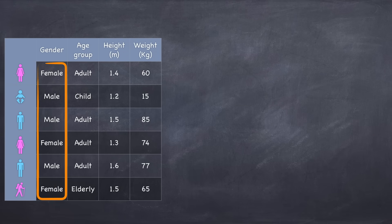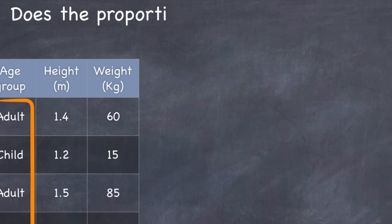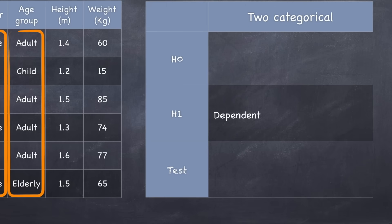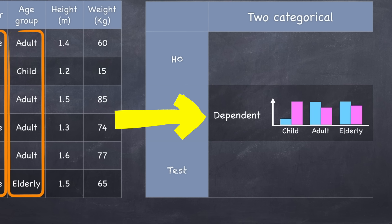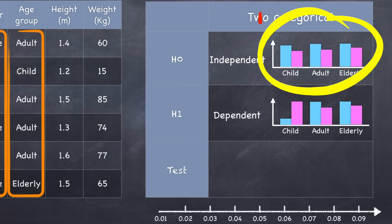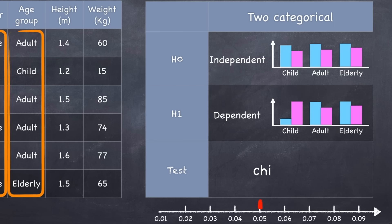If we add another categorical variable — in this case, age group — we may ask: does the proportion of males and females differ across these age groups? Our hypothesis is that the number of men and women observed is dependent on the age category. We collect sample data, look at it, and see that the proportions do change across the age groups — they are dependent on age category in our sample. But is that due to chance? Let's test the null hypothesis that the proportions are all the same, or independent of age category. Here we conduct a chi-squared test, which gives us a p-value. If the p-value is less than alpha, we reject the null hypothesis and state that our observation is statistically significant.